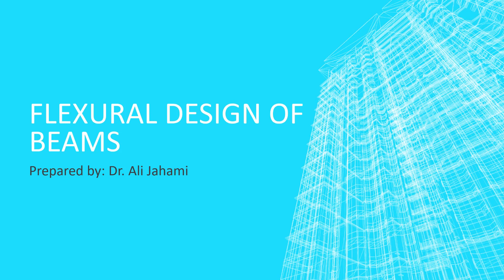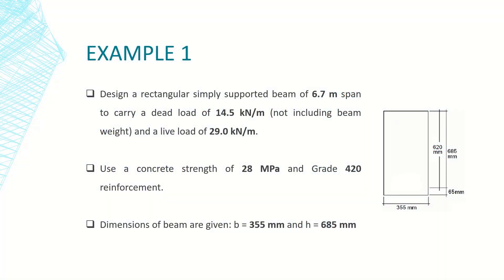Today we will be solving an example on flexure design of beams. We will consider a simply supported beam of 6.7 meters span. The beam is subjected to three types of loadings. The first load is the self weight — the weight of the beam itself — and we are going to calculate it using the density of reinforced concrete.